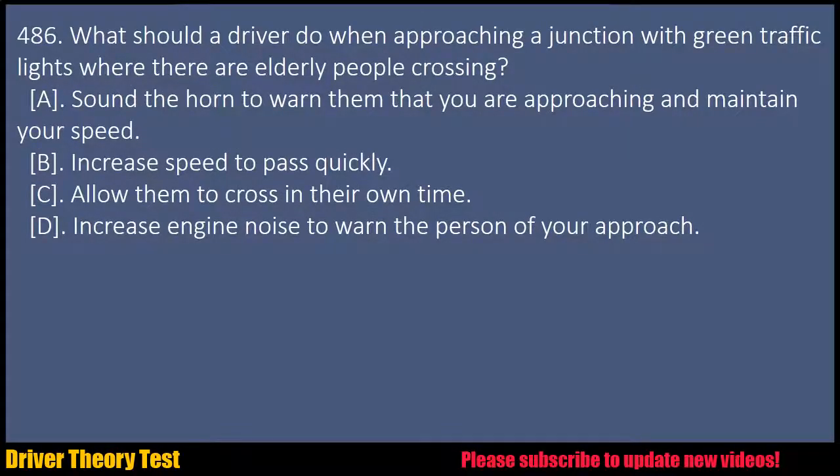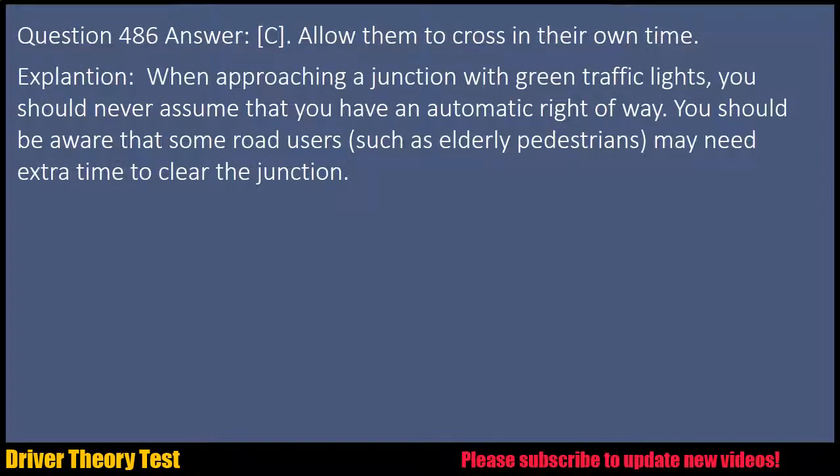Question 486: What should a driver do when approaching a junction with green traffic lights where there are elderly people crossing? A. Sound the horn to warn them that you are approaching and maintain your speed. B. Increase speed to pass quickly. C. Allow them to cross in their own time. D. Increase engine noise to warn the person of your approach. Answer: C. Allow them to cross in their own time. Explanation: When approaching a junction with green traffic lights, you should never assume that you have an automatic right-of-way. You should be aware that some road users, such as elderly pedestrians, may need extra time to clear the junction.